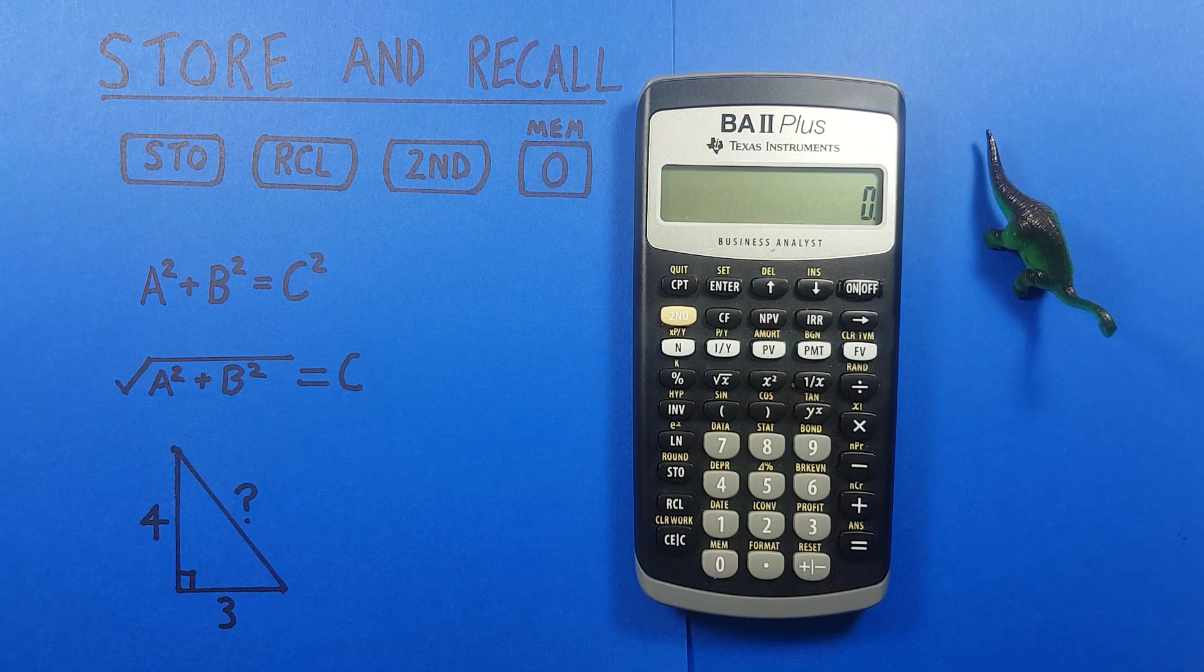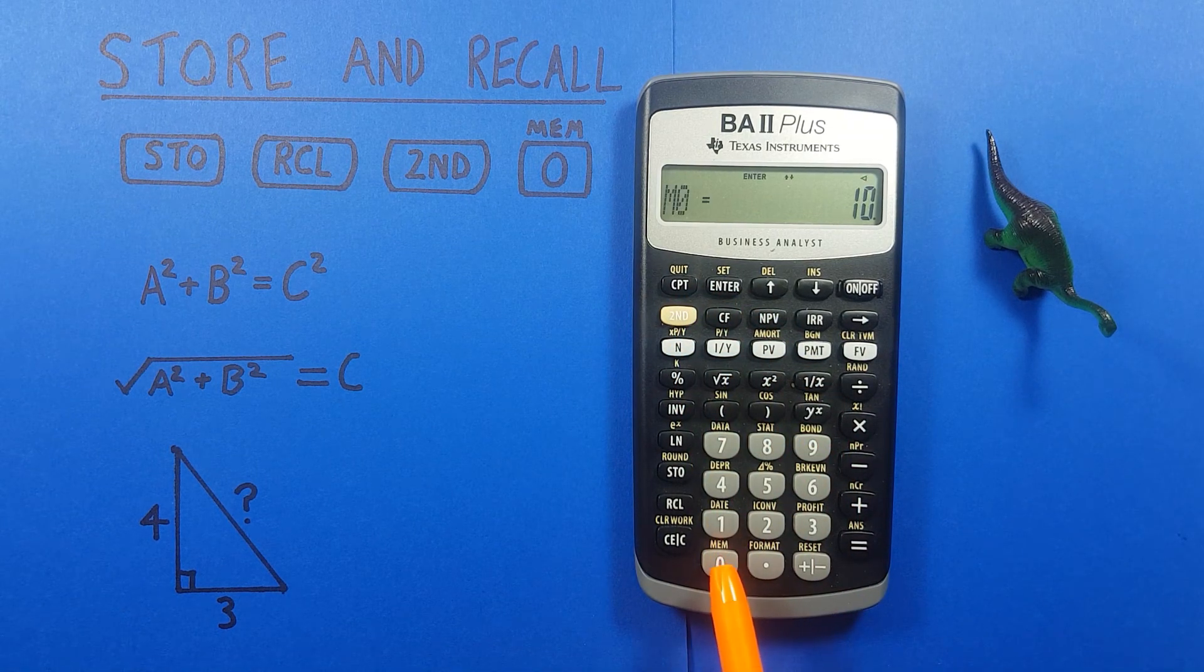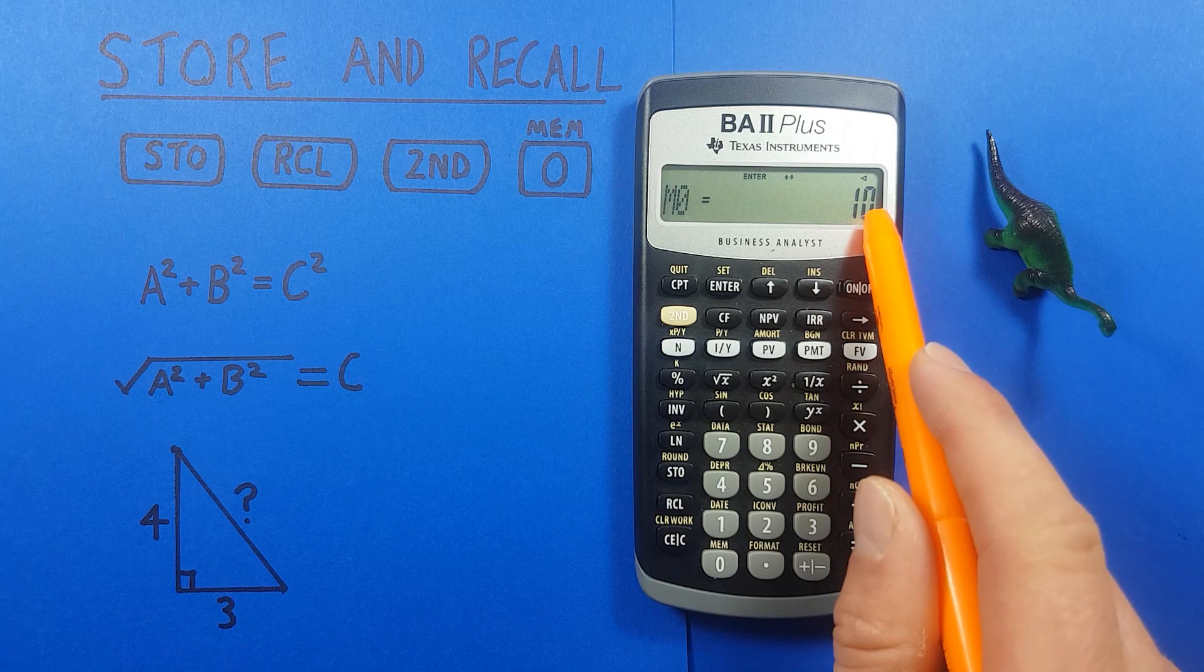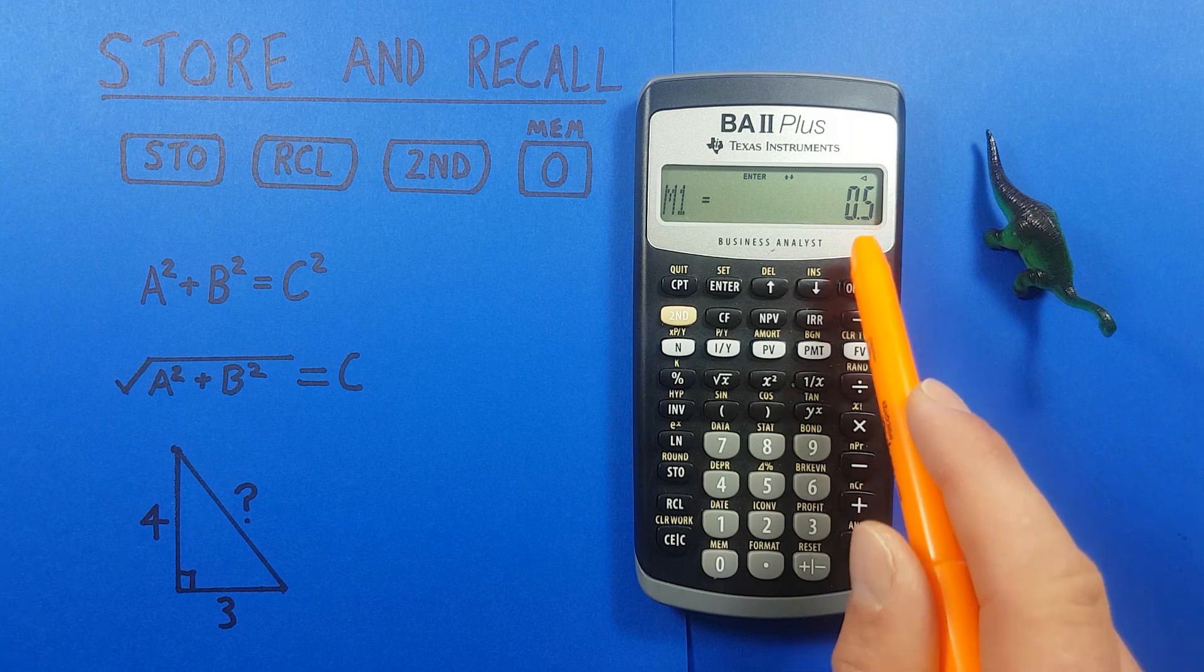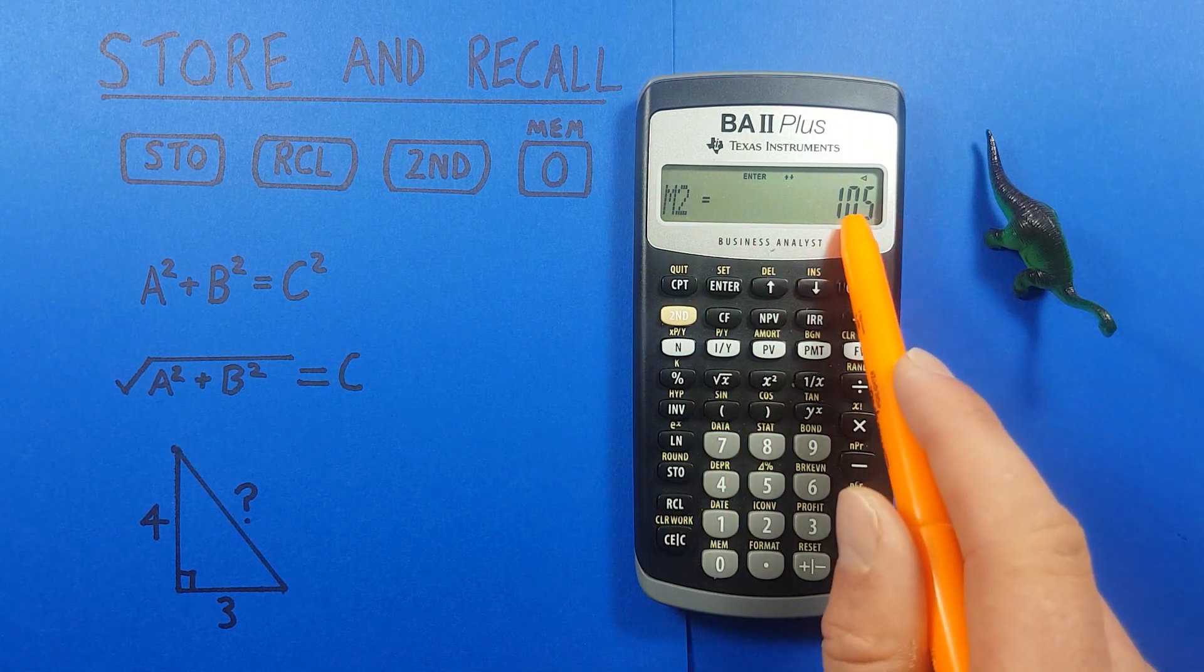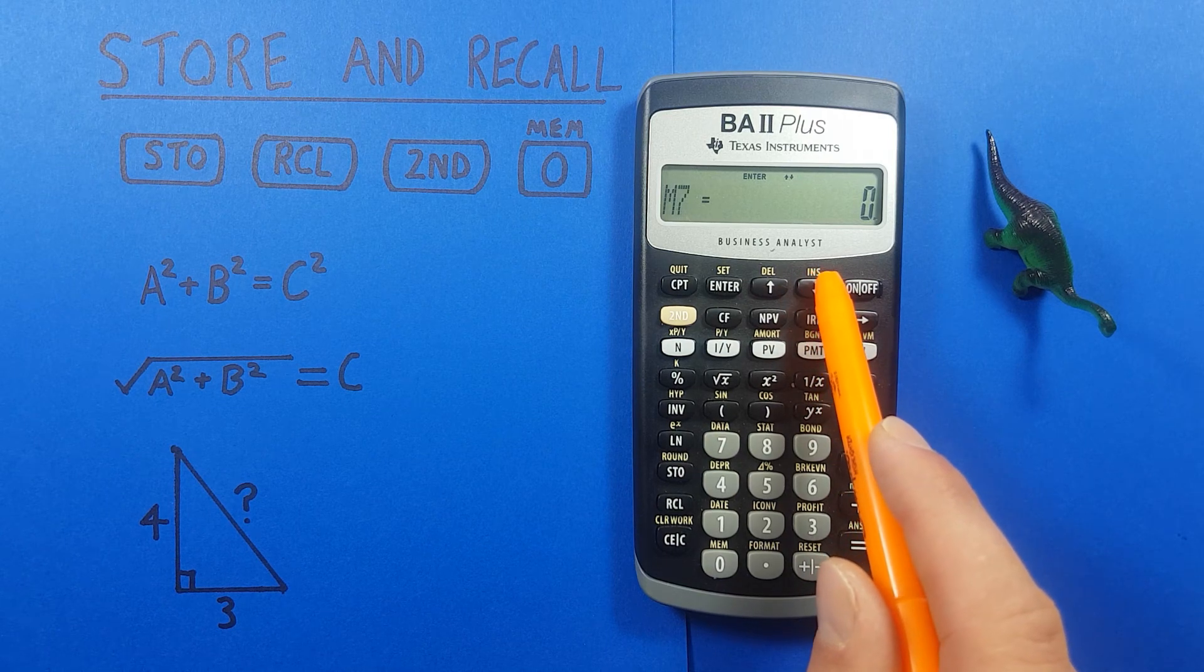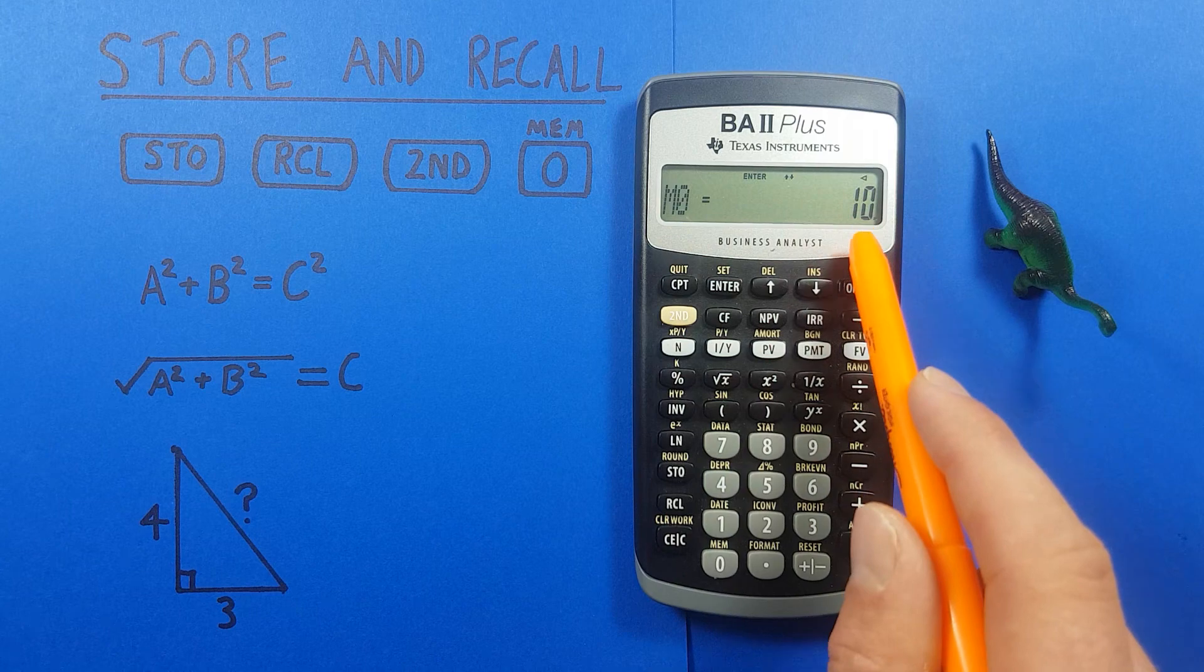You can view what you have stored in memory by pressing the second 0 key, which is the memory key, and that will bring you to this screen. Here we see M0, which is memory slot 0, has a 10 in it. If we scroll down, we see memory slot 1 has 0.5. Scroll down again, memory slot 2 has 10.5. Remember that's where we stored that. And if we keep scrolling, we see that all our other memory slots have 0 or nothing stored in them. And we keep going, and we come back to 0 and 10.